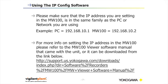Please make sure that the IP address you are setting in the MW100 is in the same family as the PC or network you are using. For example, if your PC is 192.168.10.1, the MW needs to be at least one digit different on the last octet, but the same for the first three octets. Octet 192, octet 168, and octet 10 should be the same on both devices. The last digit is your address representation — for example, PC is .1 and MW100 is .2.